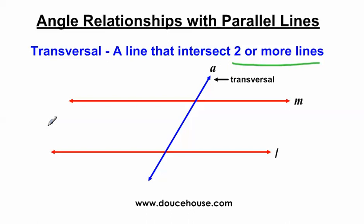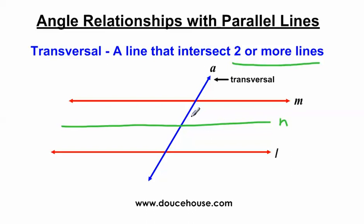Likewise, I could throw in a third line here, let's call it line N. Line A is still a transversal because it's crossing at least two lines. A transversal can be a line crossing two lines, three lines, or four lines, but it needs to be crossing at least two lines.